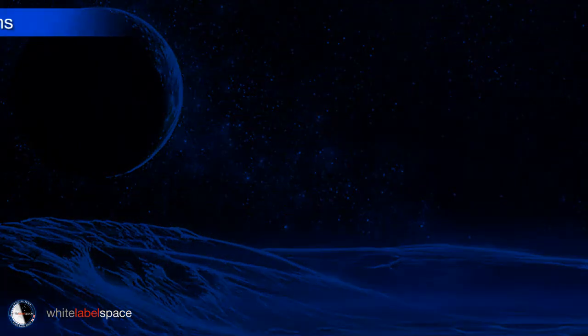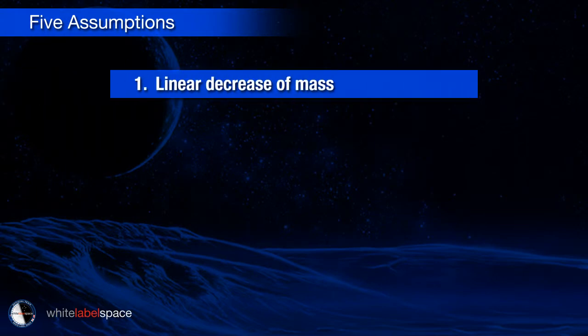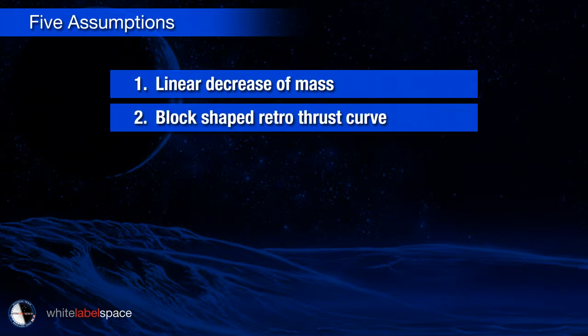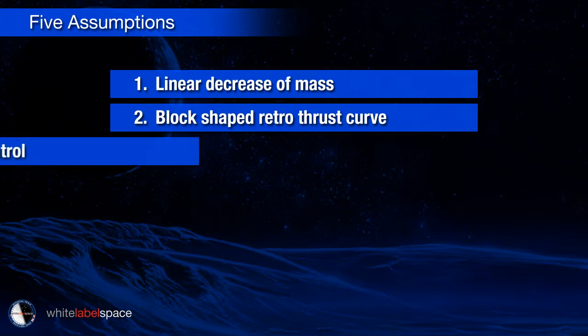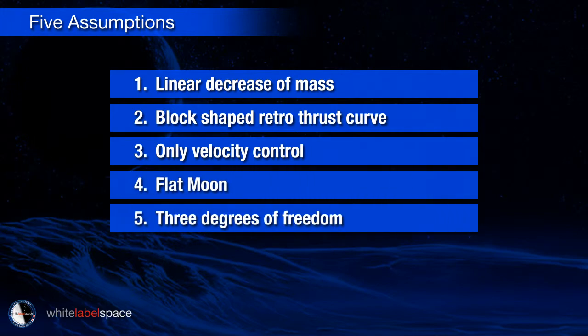To simplify the simulator we have made five assumptions. First, we assume that the mass decreases linearly, related to the thrust setting with a constant parameter. Second, for the main retromotor we assume a constant thrust — a block-shaped profile for the entire burn period. Third, we have only implemented the velocity control system of Surveyor 1; the attitude control system is mimicked by a scheme discussed in the gravity turn chapter.